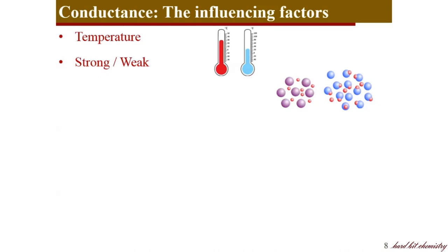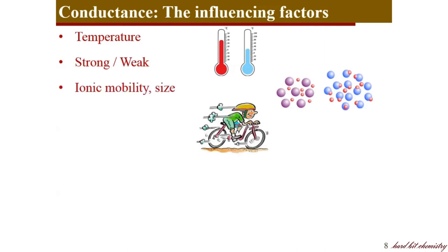The amount of ions furnished by strong and weak electrolytes differs, causing a difference in their conductances. Then obviously the size and mobility of ions matters — it is the ions that carry electricity through the electrolyte, so the nature of the ions, especially their size and mobility, determines the conductance.